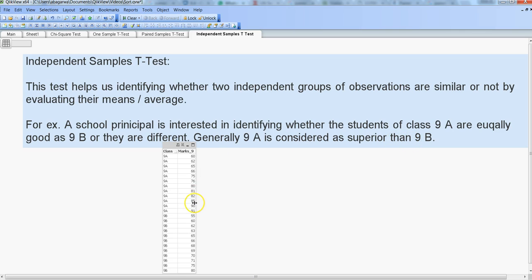And the idea is generally 9A is considered superior than 9B. So we want to do this test and figure out whether class 9A and 9B is equal to each other or different than each other. That means it can be on the lower side or it can be upper side, and this is basically a two-tail test.